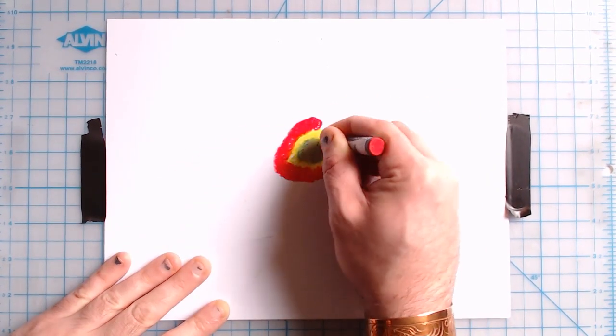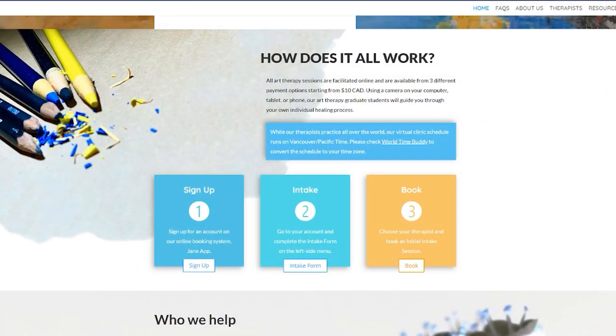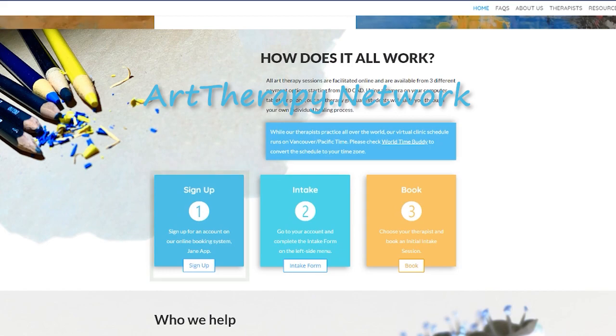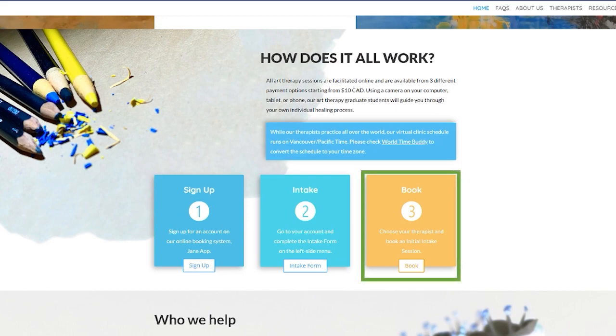You can get started in three easy steps. First, visit arttherapy.network and sign up through our online booking system. Second, navigate your account and fill out the intake form. And finally, choose your therapist and book online.